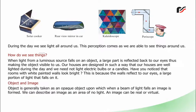Object and image: Object is generally taken as an opaque object upon which when a beam of light falls, an image is formed. We can describe an image as an area of low light. An image can be real or virtual.